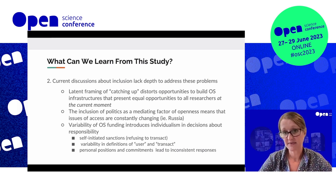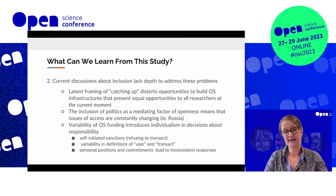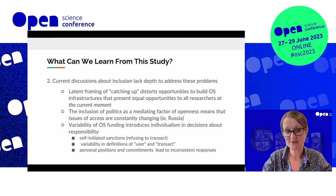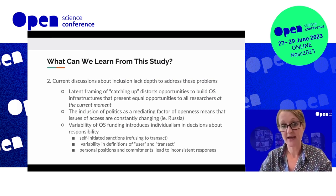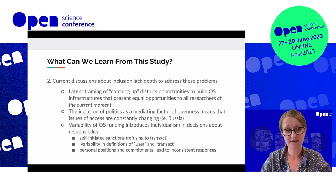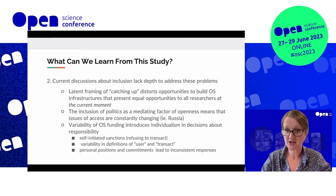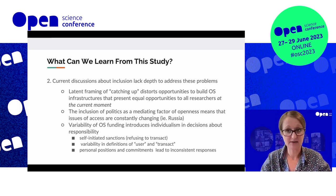It's also becoming apparent that the current discussions about the evolution of the open science landscape and current discussions about inclusion really lack the depth to address these problems. Because we are still talking in terms of the digital divide — these latent framings of 'catching up,' so once you have sufficient ICT and computing power — this distorts opportunities to build open science infrastructures that present equal opportunities to researchers at the current moment. We can't keep waiting for everything to be worked out in the future. What we're seeing from our study and from related studies is that at the moment the open science landscape is unequal and we need to do something about that. What we're also seeing from the 403 returns is that the inclusion of politics as a mediating factor of openness means that issues of access are continually changing because financial sanctions and geopolitical tensions change very rapidly around the world — and this can rapidly change researchers' access to seemingly open resources, as we see with the current situation in Russia and other situations around the world.